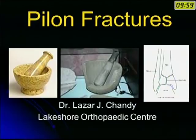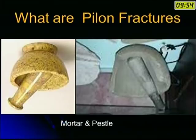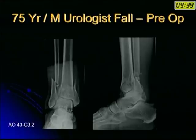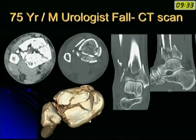Our topic is pilon fractures. This is the ankle joint, the ankle mortise — the mortar — and the pestle is the talus, and when the talus hits against the tibia, it breaks and you have the pilon fracture. This is a 75-year-old male urologist who fell, and these are the X-rays and CT scan showing the condition of his distal tibia.